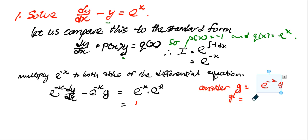then you get g' equal to negative e to the power of negative x y plus e to the power of negative x dy/dx. And you can see that this is exactly this side, that is the left-hand side.